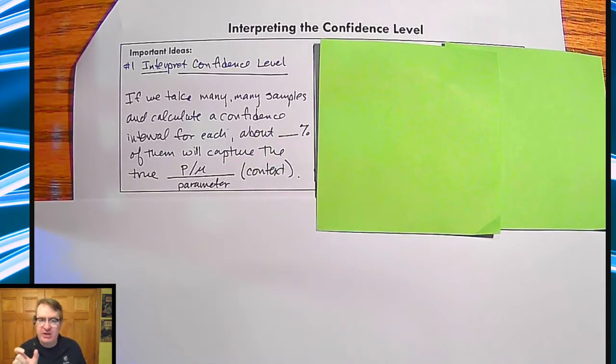So that percentage talks about what percentage of the samples with the confidence intervals will capture that true proportion, you know, that many times percentage wise. So it's not a probability. It's not all that other stuff. It's just saying this is what's going to happen.